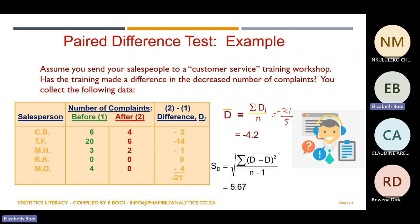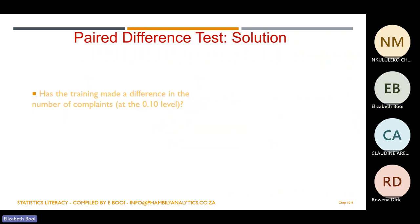The standard deviation is the square root of the sum of each difference minus the mean squared, divided by n minus one. For every observation, you take the difference minus the mean, square the answer, sum all of them, then divide by four and take the square root. The answer is 5.67. So we have a mean difference of minus 4.2 and a standard deviation of 5.67.